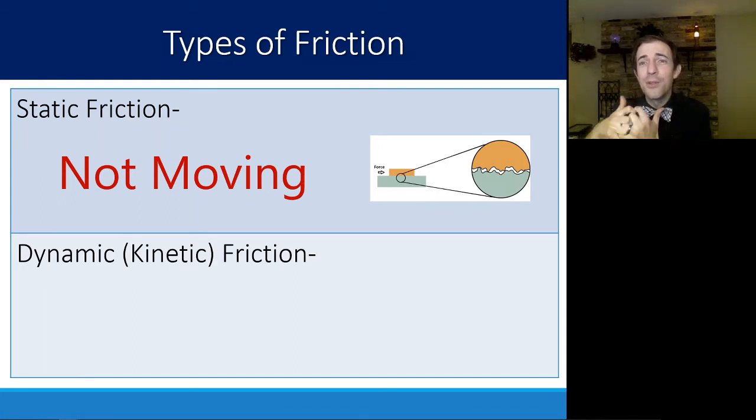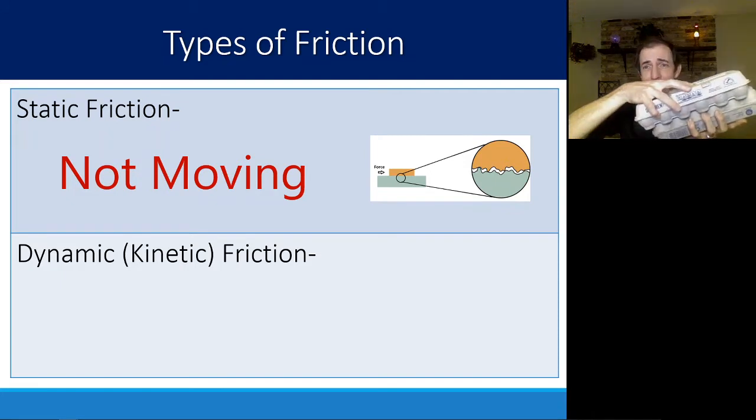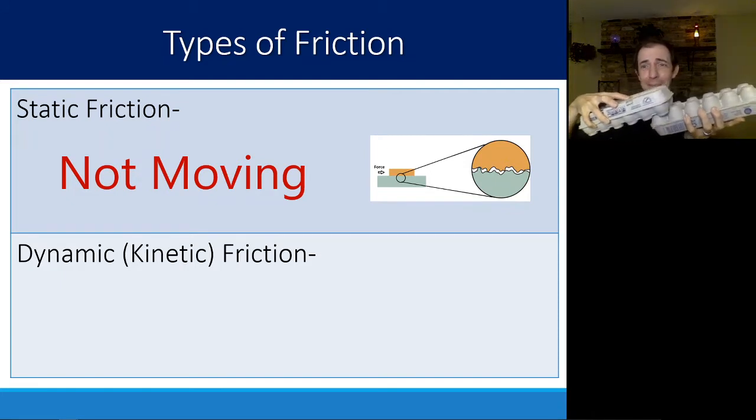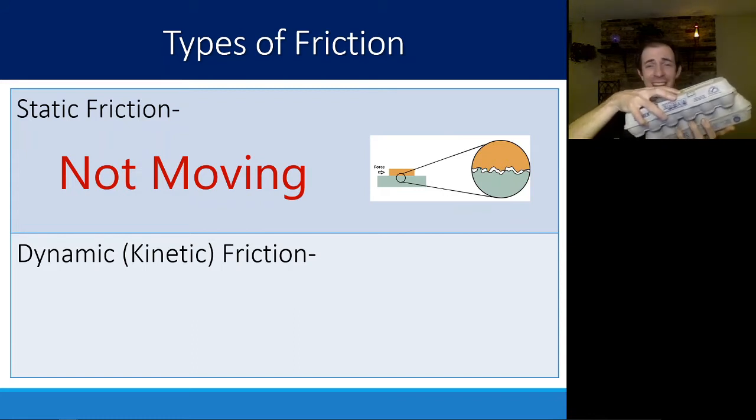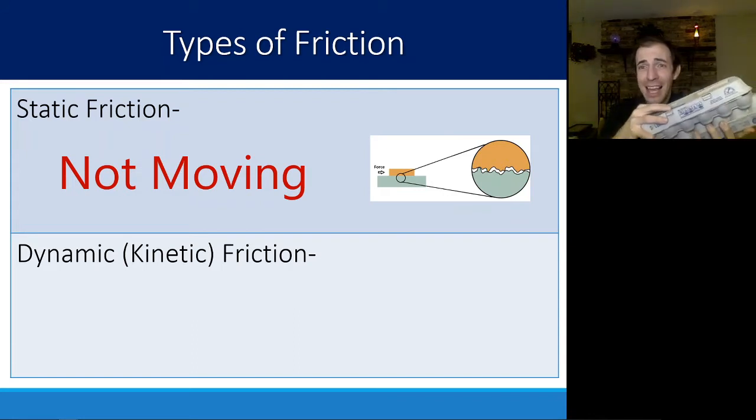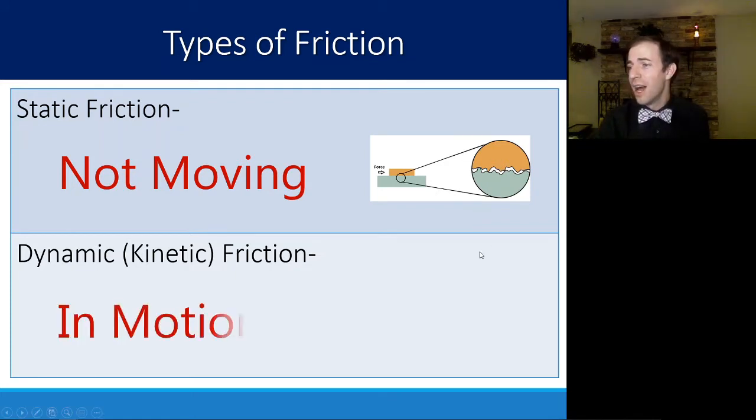Once you overcome that static friction, you have dynamic friction with objects that are sliding across each other. These surfaces don't have the ability to really settle into those grooves anymore. Our kinetic friction is friction that is in motion.